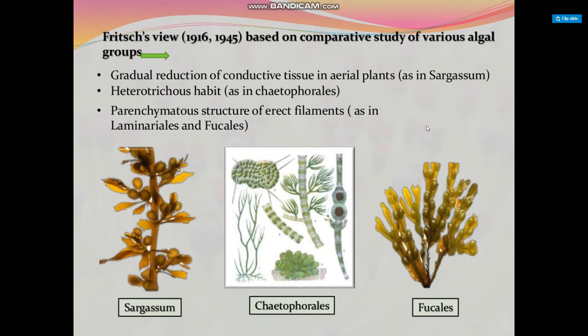Friderich (1916–1945), based on a comparative study of various algal groups, noted gradual reduction of conductive tissues in aerial plants such as Sargassum, heterotrichous habits as in Cladophora, parenchymatous structures of erect filaments as in Laminariales and Fucales. The figures show Sargassum, Cladophora, and Fucales illustrating these structural comparisons.